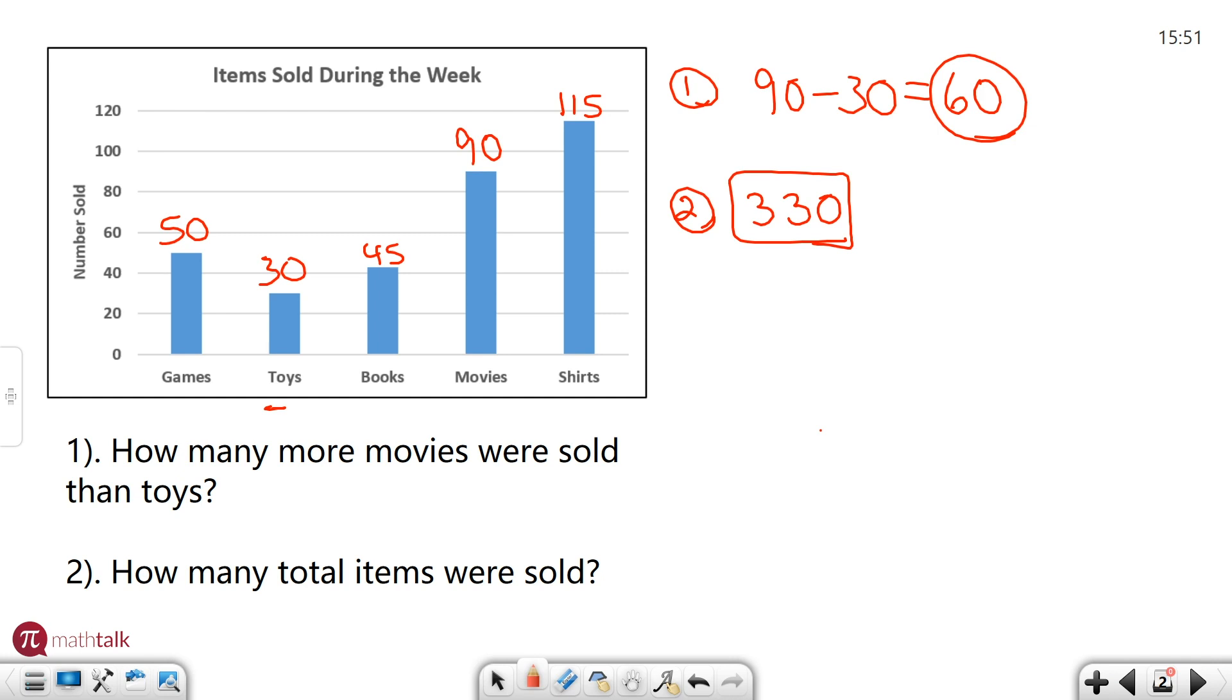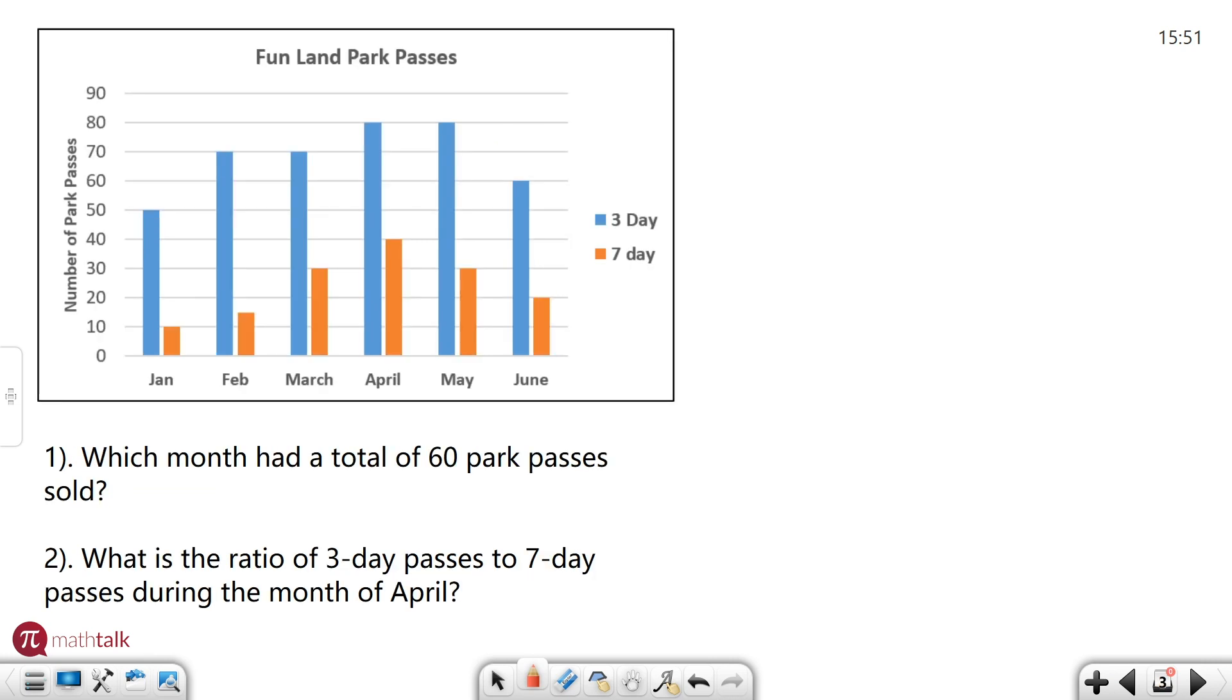Let's look at another one. This one is a similar bar graph but it has two bars on each category, so there's a little bit more information there. What you see on the right hand side here is what's called a legend, and it tells you what each of the bar colors represents. The blue bars are three day park passes in this case. The orange ones are seven day park passes.